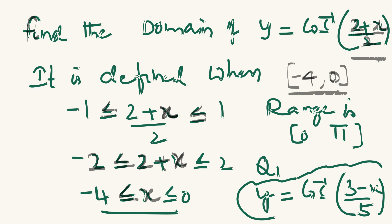The range, as usual, lies between 0 and π. Here is the second practice question: Find the domain as well as range of y = cos⁻¹((3 - x) / 5).